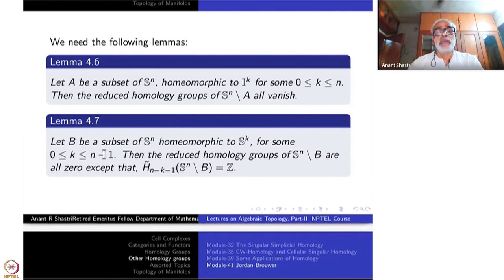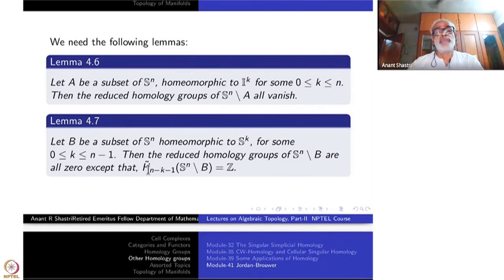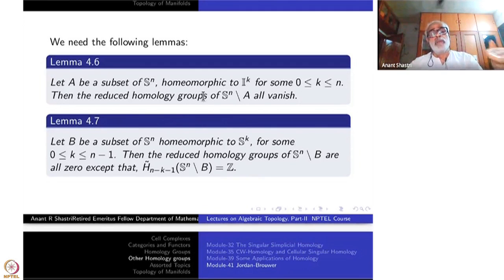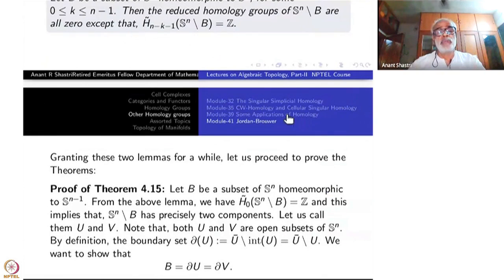The second lemma says that if B is a subset homeomorphic to S^K for K less than N minus 1, then the reduced homology groups of the complement are all zero except at level N minus K minus 1, where it is an infinite cyclic group. We shall prove 4.7 first and then 4.6, using 4.6 while proving 4.7, completing the Jordan-Brauer theorems.